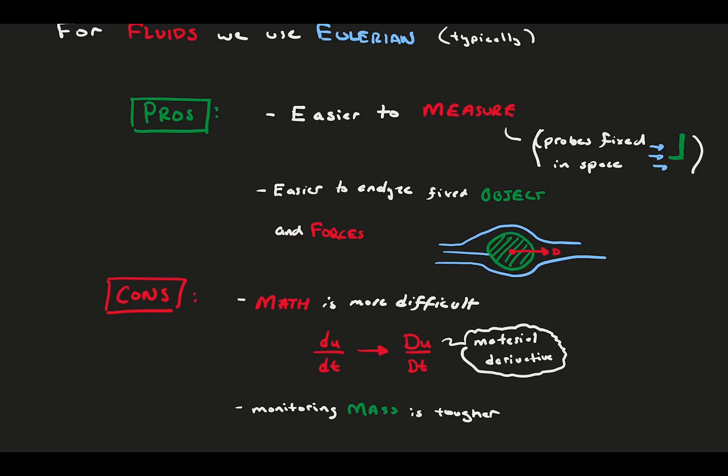Second, monitoring the mass of the system is a bit harder in the Eulerian perspective. At any given point in time, our observation window might have more or less fluid in it than it did before, meaning the mass of the fluid we're watching changes. So what we typically do to combat this is think in terms of fluid density, which is the mass per unit volume, and use that as a conduit for mass in our equations.